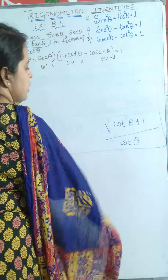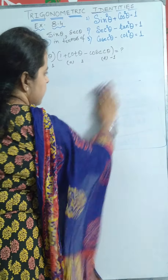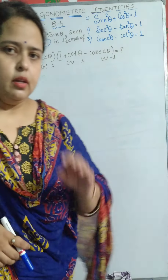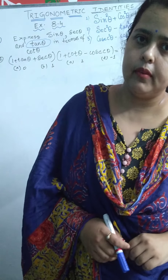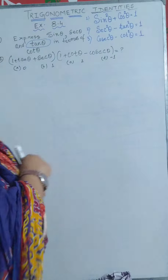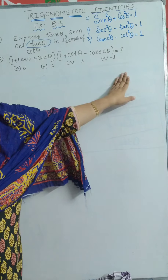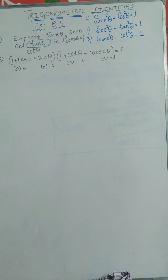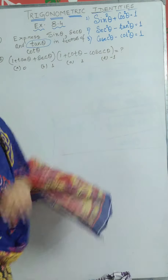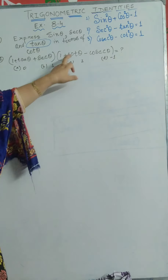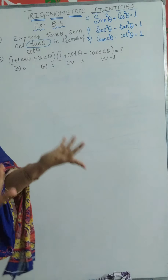Let us go with the second problem. I have chosen a problem from question number 2. It is a MCQ pattern problem where you have 4 options. The problem is: (1 + tan θ + sec θ)(1 + cot θ - cosec θ). We have to find the correct result and put a tick mark on the right option, but before that, we must solve it.